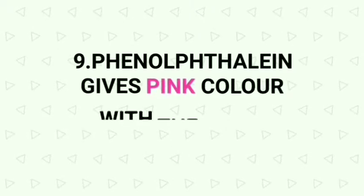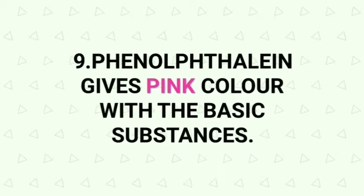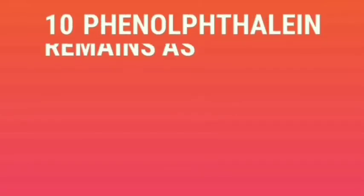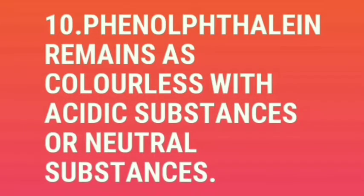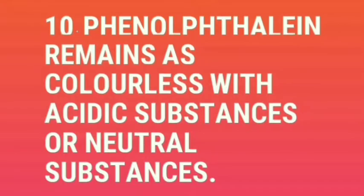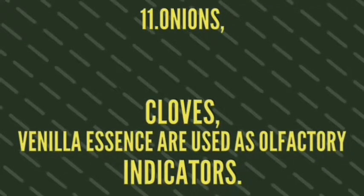Phenolphthalein gives pink color with basic substances. Phenolphthalein remains colorless with acidic or neutral substances. Onions, cloves, and vanilla essence are used as olfactory indicators.